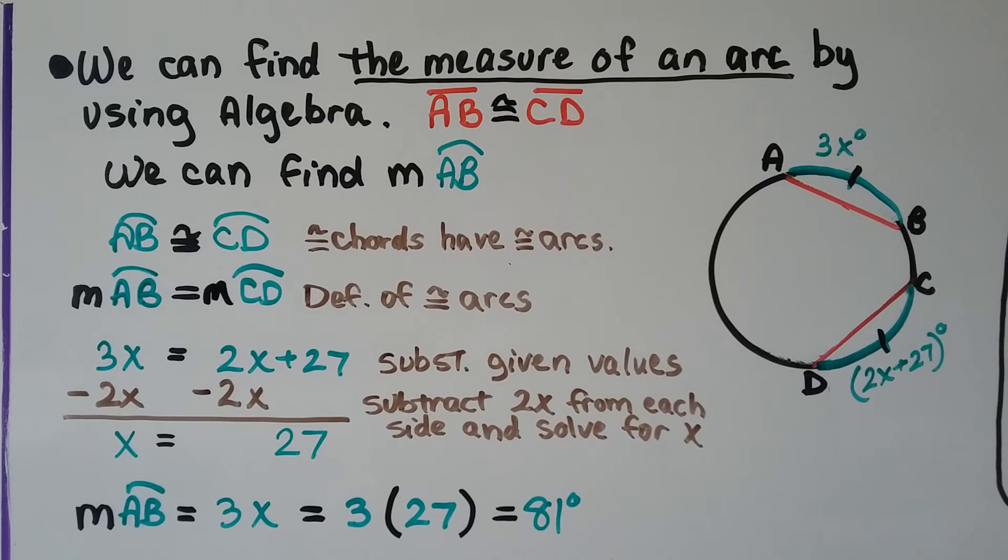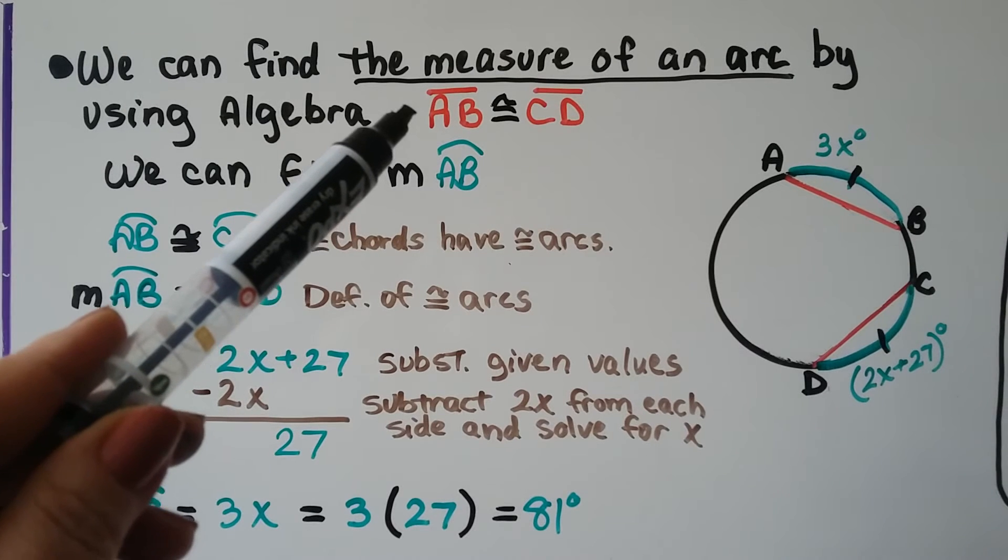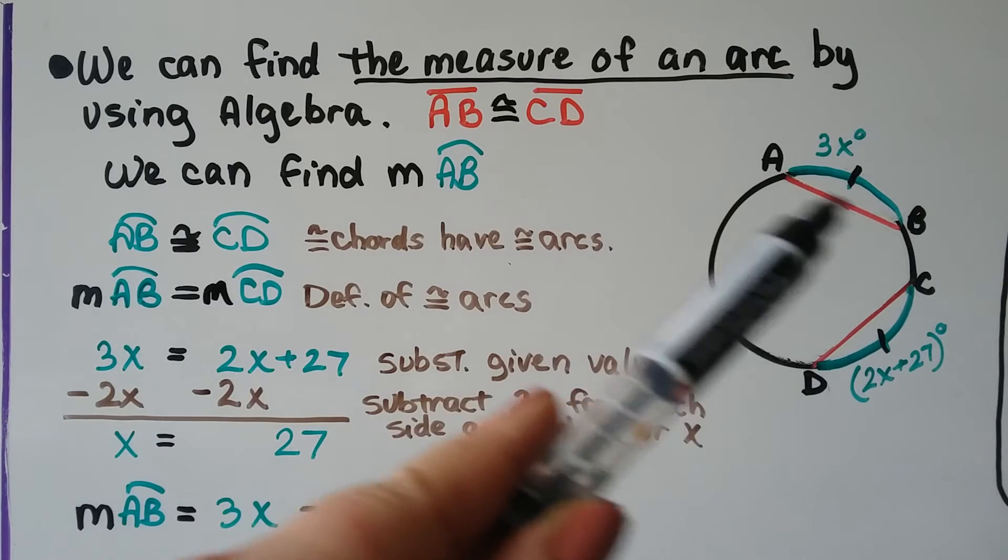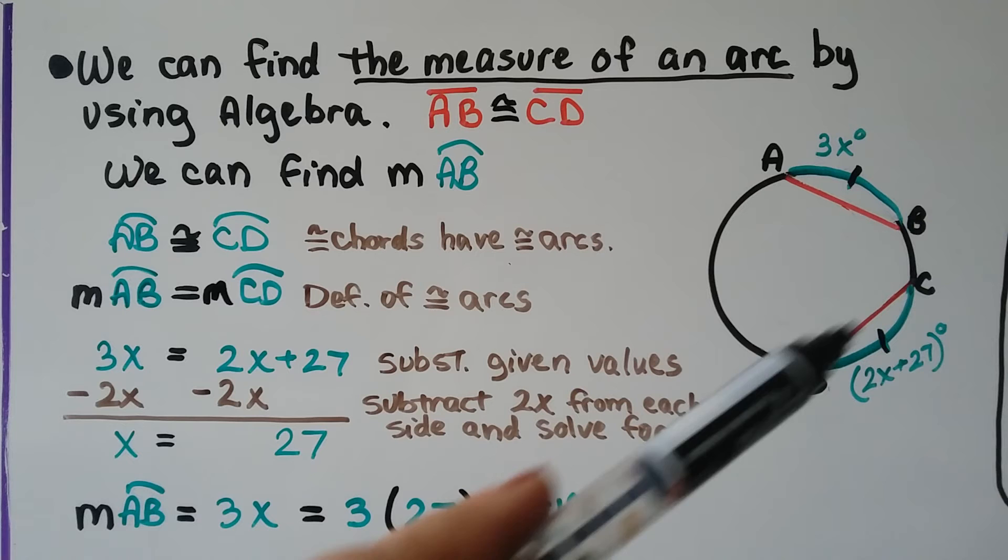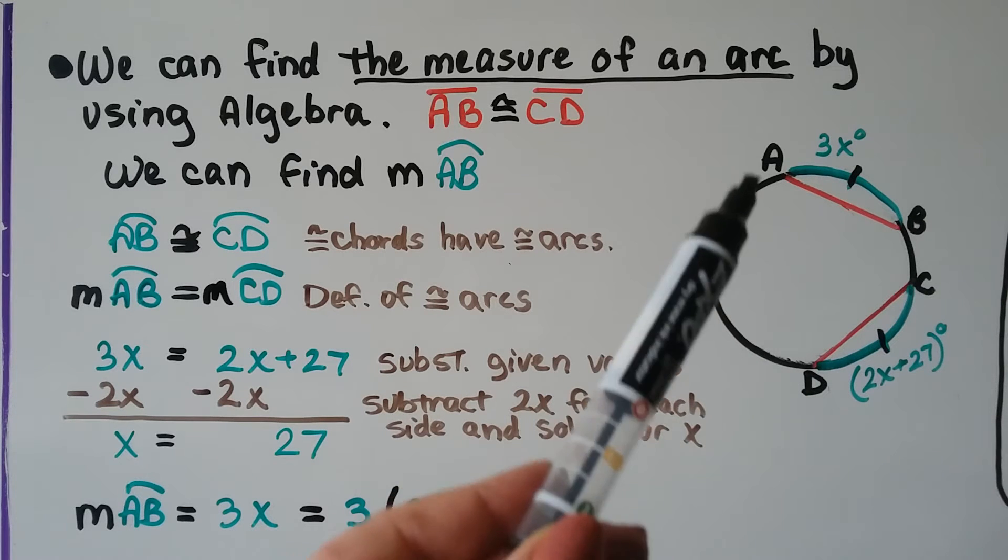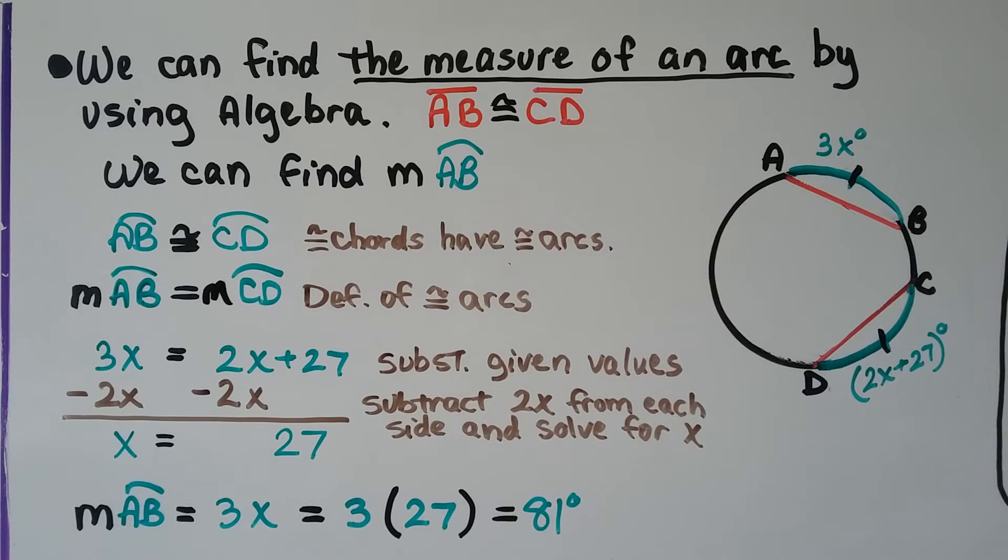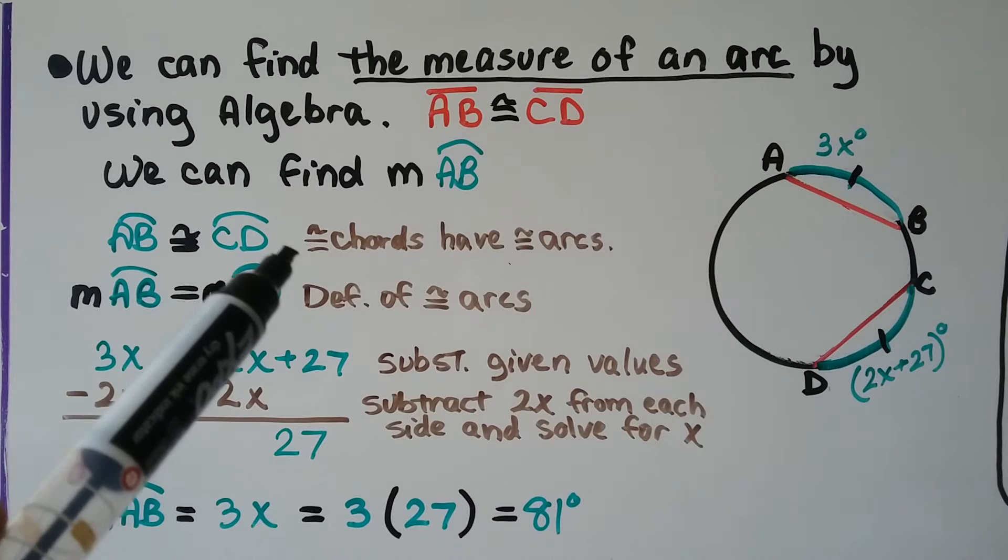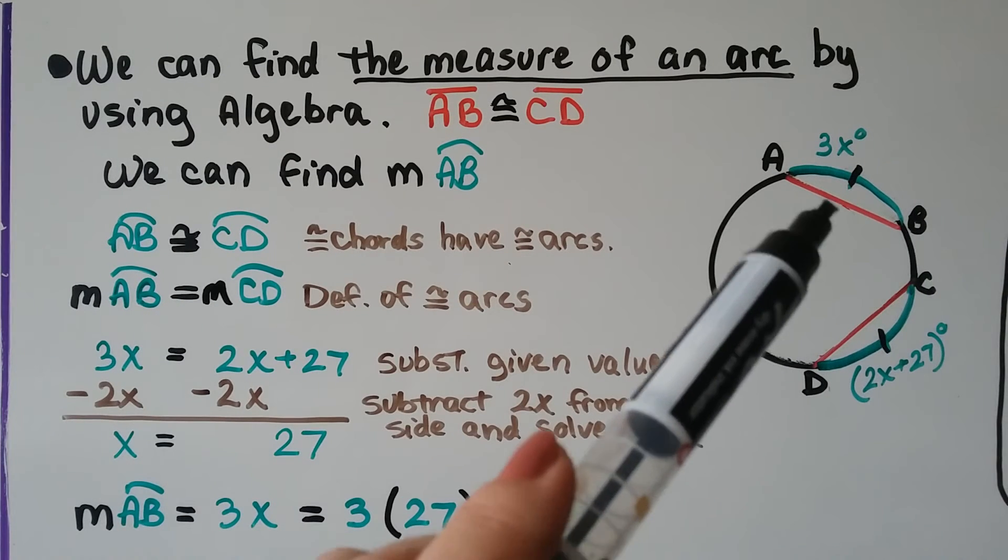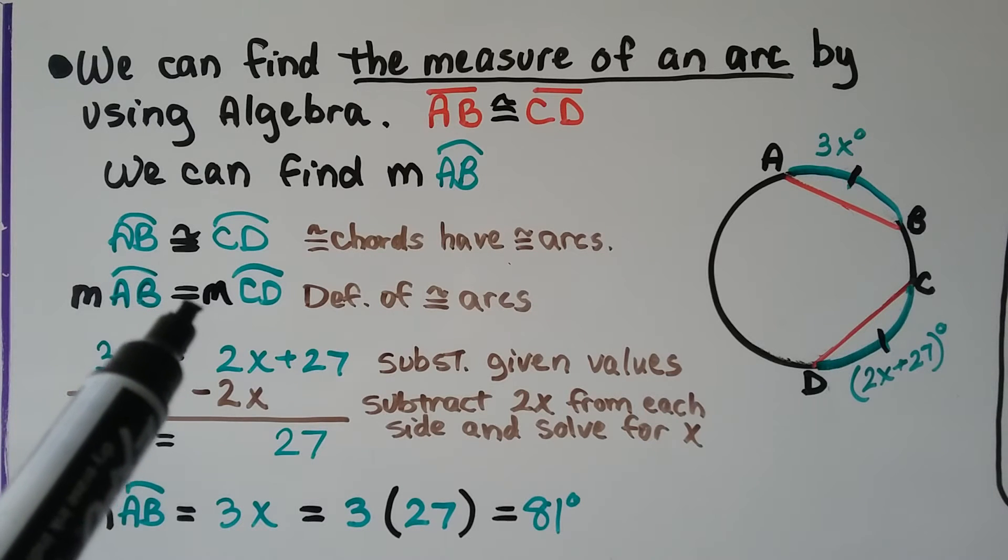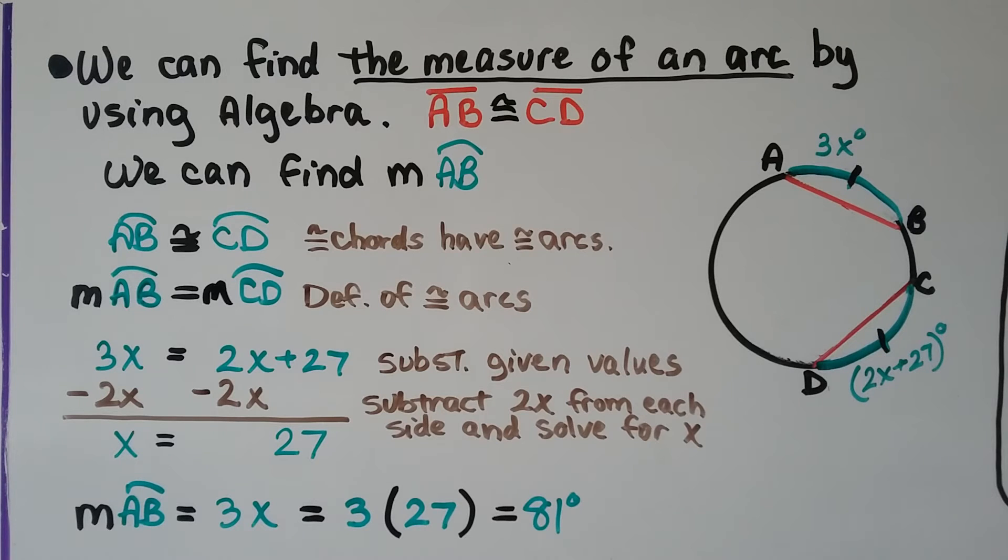We can find the measure of an arc by using algebra. It's giving us that segment AB, this chord, is congruent to segment CD, that chord. So this chord is congruent to this chord. And we can find the measure of arc AB. It's telling us it's 3x degrees. Well, arc AB is congruent to arc CD, because congruent chords have congruent arcs. And the measure of arc AB is equal to the measure of arc CD, because of the definition of congruent arcs.